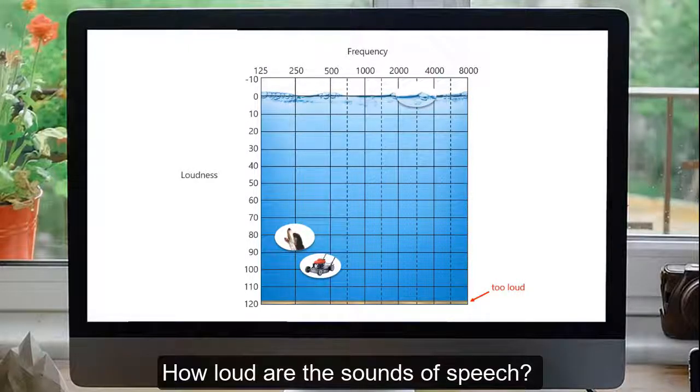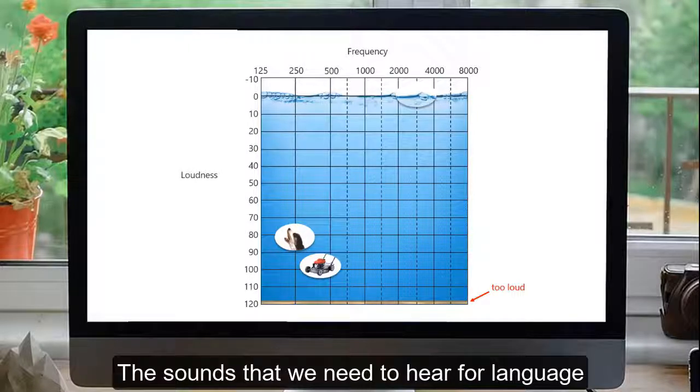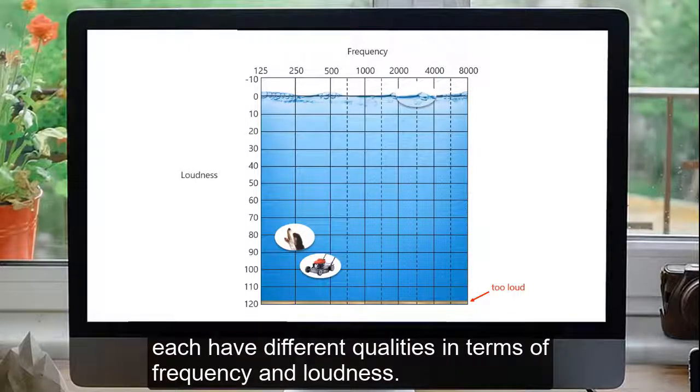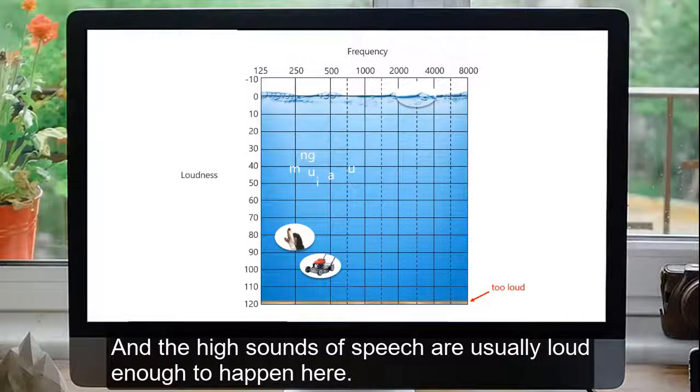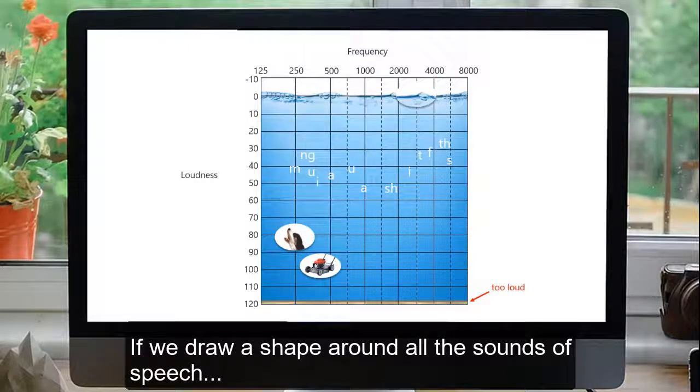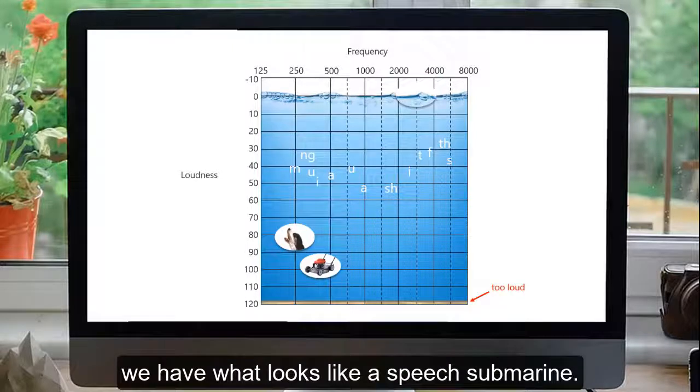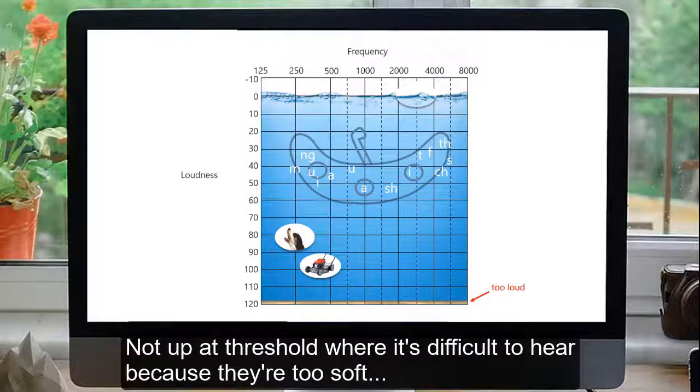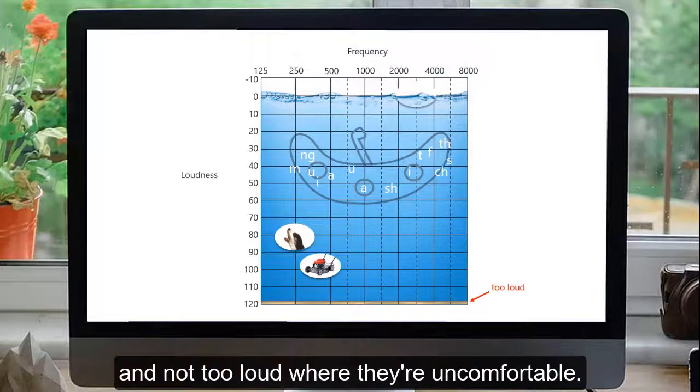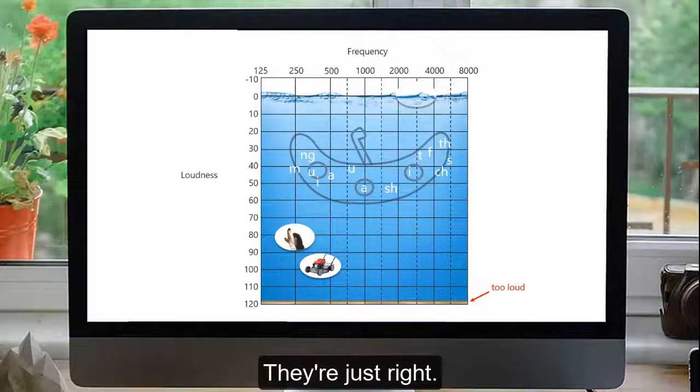How loud are the sounds of speech? The sounds that we need to hear for language each have different qualities in terms of frequency and loudness. The low sounds of speech are usually loud enough to happen here, and the high sounds of speech are usually loud enough to happen here. If we draw a shape around all the sounds of speech, we have what looks like a speech submarine. The sounds of speech are just at the right level for most people to hear easily. Not up at threshold where it's difficult to hear because they're too soft, and not too loud where they're uncomfortable. They're just right.